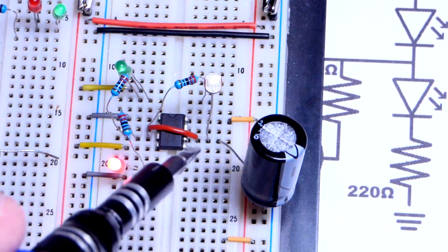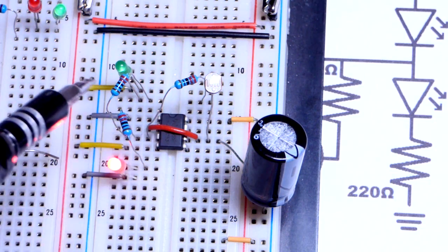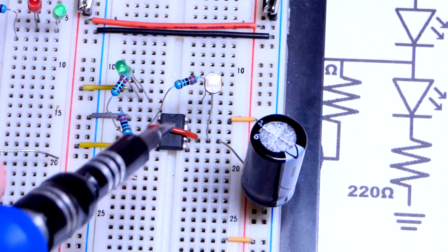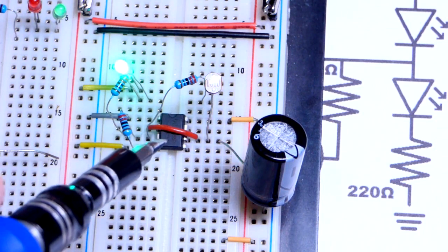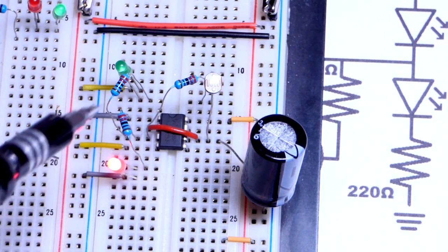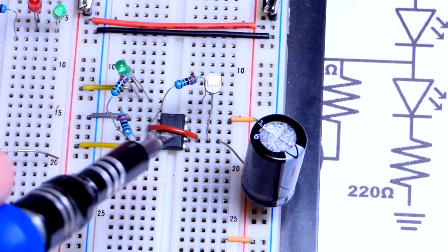When it starts discharging, then the output does connect directly to the negative rail. That's when the green LED lights up. Current goes through the LED, the resistor, and then to ground. So it does connect pretty good, pretty closely, directly to ground. And so it discharges the capacitor faster.